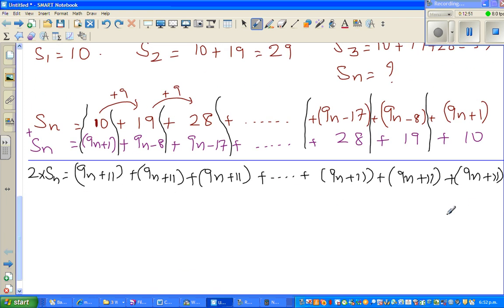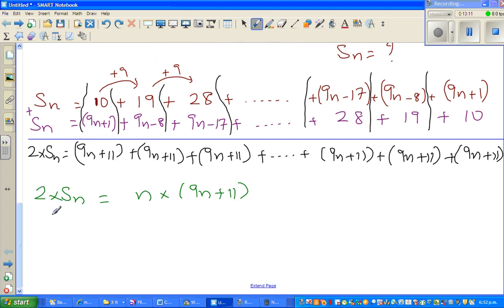So how many lots of 9n plus 11 are in this addition? You can see you've got n lots of, so I can say 2 times Sn is equal to n times 9n plus 11. So if you divide both sides by 2, so this and this gets cancelled. So Sn is n times 9n plus 11 divided by 2.